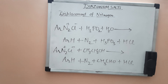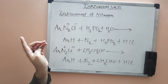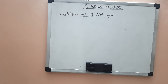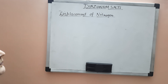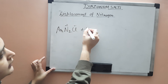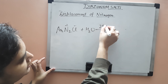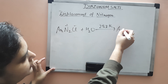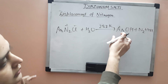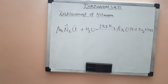Those were two more reactions of displacement of nitrogen in the diazonium salt. Now, the hydroxide group can be introduced by heating the diazonium salt solution up to 283 K. You take your aryl diazonium salt, heat it to 283 K, and the hydroxyl group is introduced — you get aryl hydroxide (phenol, if benzene is used), N2, and HCl.